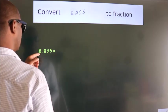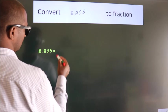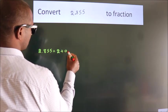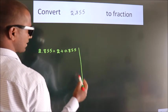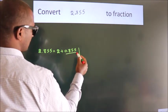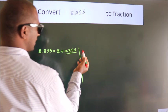First we should break this into 2 plus 0.855. Next, convert this to fraction over here.